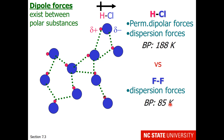Now let's look at their boiling points. They differ by more than 100 degrees. That difference is due to the permanent dipolar forces. The process of boiling something means that one breaks the intermolecular forces. So the fact that hydrogen chloride has a much higher boiling point indicates that it has much stronger intermolecular forces than fluorine does.